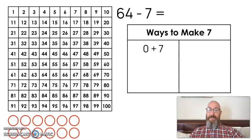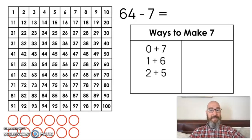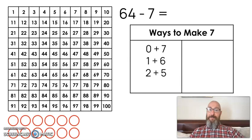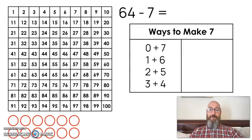You can write them down if you want to or just start thinking about them. We have 0 plus 7, 1 plus 6, 2 plus 5, 3 plus 4, 7 plus 0, 6 plus 1, 5 plus 2, 4 plus 3. Those are all different ways to make 7.